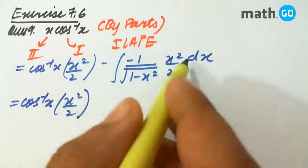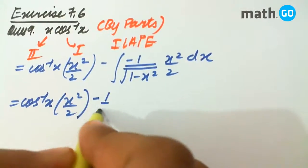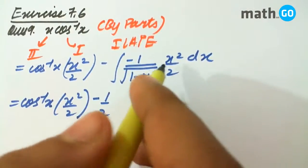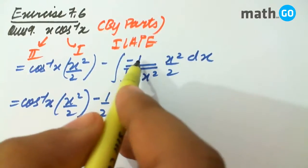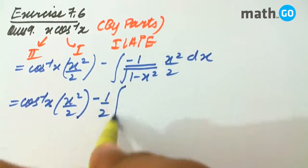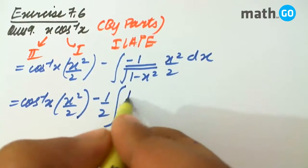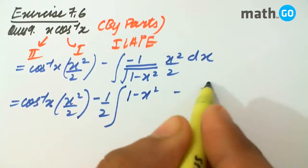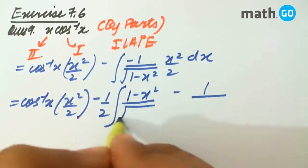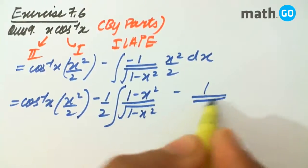So, here we have 1 by 2 common. Now, it is minus x square. If we add 1 and subtract 1, we will get 1 minus x square minus 1 and this is the denominator.